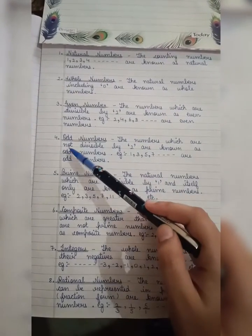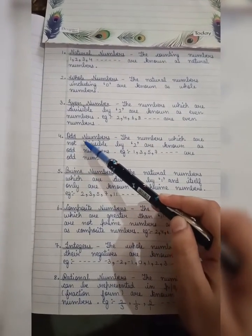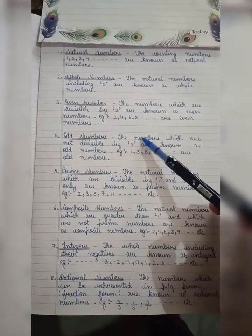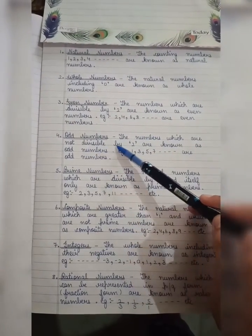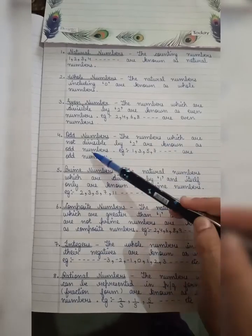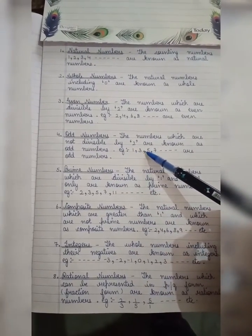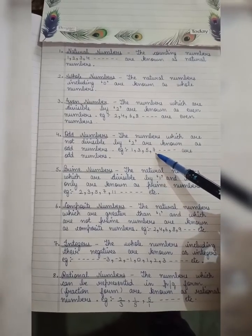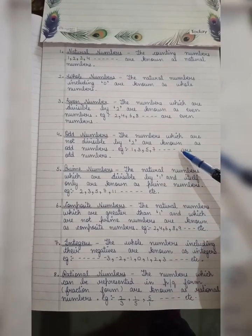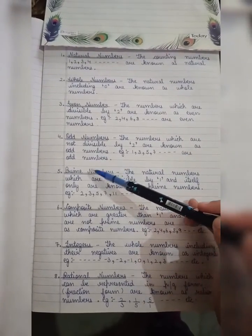Odd numbers - the numbers which are not divisible by 2 are known as odd numbers. Example: 1, 3, 5, 7, 9, etc. are odd numbers.